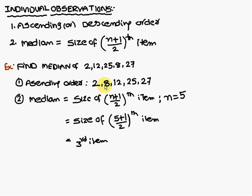Don't see this third item in the given observations. You have to look for the third item in the ascending order. This is the ascending order. In this order only you have to look for the third item. First item is 2, second, third. Therefore, 12 is the median.